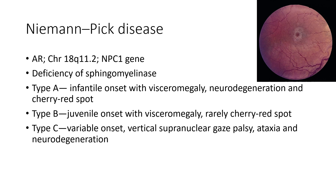Next is Niemann-Pick disease. It is an autosomal recessive condition with deficiency of sphingomyelinase. Type A has infantile onset with visceromegaly, neurodegeneration, and cherry-red spot. Type B has juvenile onset with visceromegaly and rarely cherry-red spot. Type C has variable onset and is characterized by vertical supranuclear gaze palsy, ataxia, and neurodegeneration.